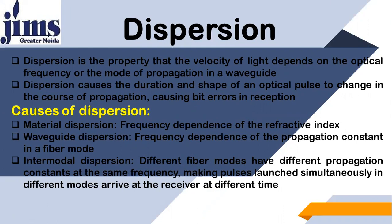We start again with dispersion. We had already talked about dispersion in previous lectures, and today we again have some different types of dispersion. Dispersion is the property that the velocity of light depends on the optical frequency or the mode of propagation in a waveguide. There is a relationship between frequency of propagation and velocity.